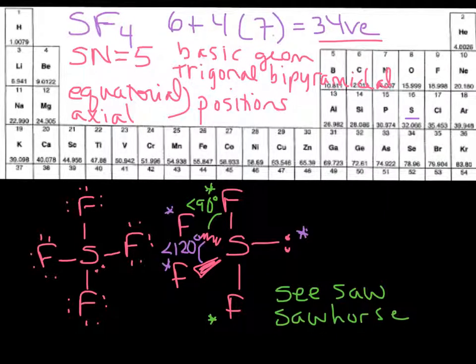But overall, this is an example of a trigonal bipyramidal basic geometry with two different types of positions, equatorial and axial, with two different bond angles. And remember, steric number five is the only group that has two different bond angles and two types of positions.